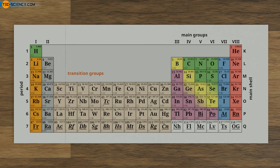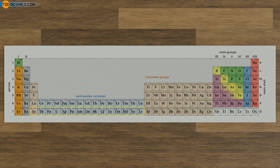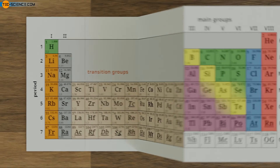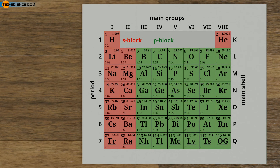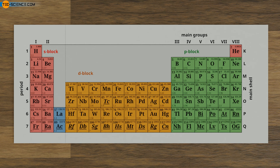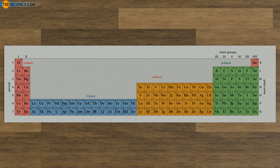The division of the periodic table into main groups and transition groups results from the different order in which the orbitals are occupied by electrons — the so-called electron configuration. For the same reason, a further division can be made into lanthanides and actinides; the term actinide reflects that all these elements are radioactive. For the main group elements, the s or p orbitals are occupied first, so the main group elements can be divided into an s block and a p block. For the transition group elements, an electron is added to the d orbital — these elements are found in the d block. For the lanthanides and actinides, the f orbital is occupied, so one speaks of the f block. Note that determining the number of valence electrons based on group number is no longer possible for the transition group elements — all transition metals have only one or two outer electrons, so all transition elements have similar chemical properties.